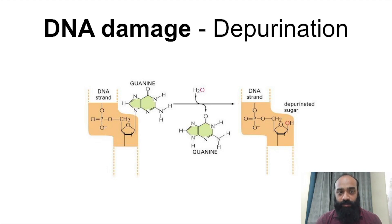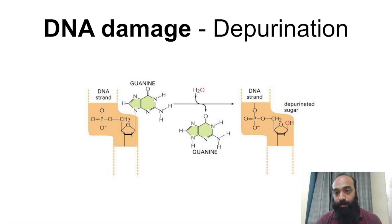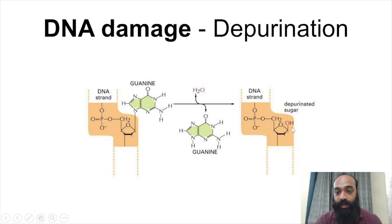Another type of DNA damage is depurination. In a nucleotide composed of a sugar, phosphate, and a base, depurination involves the removal of the base from the nucleotide, giving an abasic nucleotide. For example, guanine can be removed, leaving only the sugar and phosphate — referred to as an apurinic site. Depyrimidination can also occur. When this happens it can lead to problems in further replication and DNA expression.